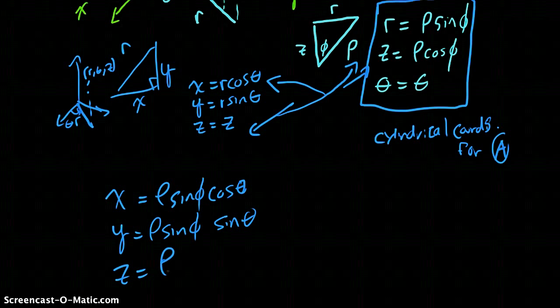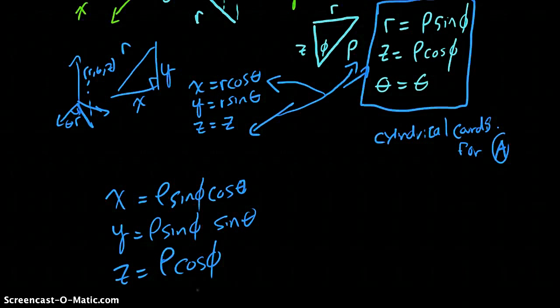Well, z actually is going to equal rho cosine phi. So I'm using the same equations and just substituting them in to find out what the spherical coordinates kind of look like once you put them into cylindrical, and then what they look like once they get all the way down to Cartesian.